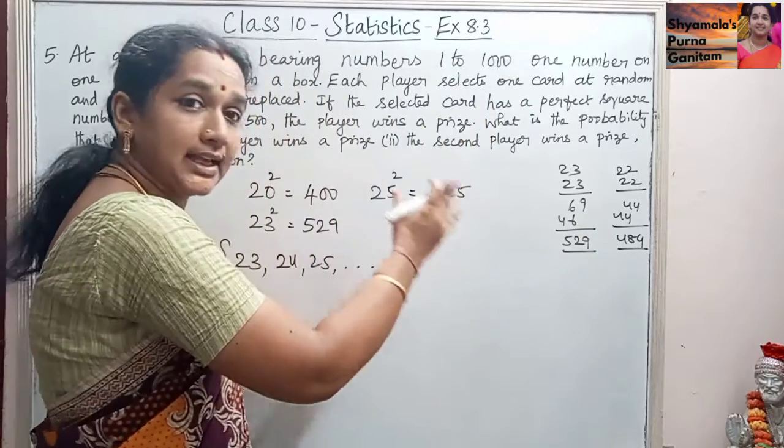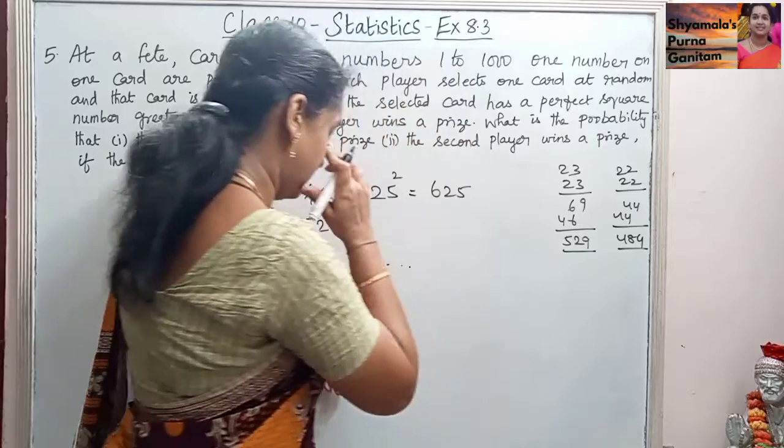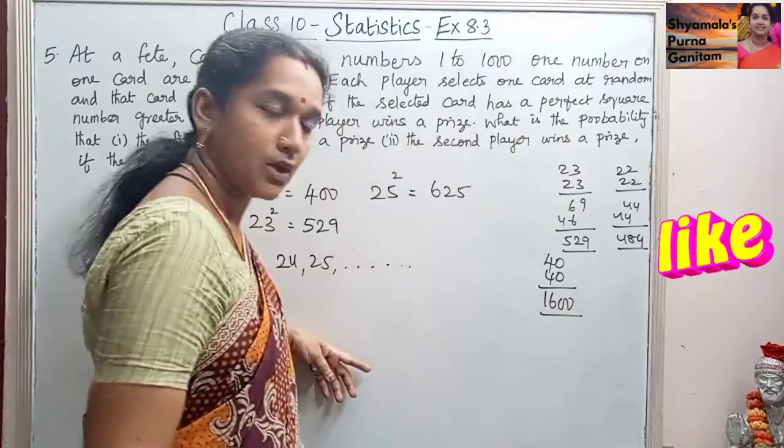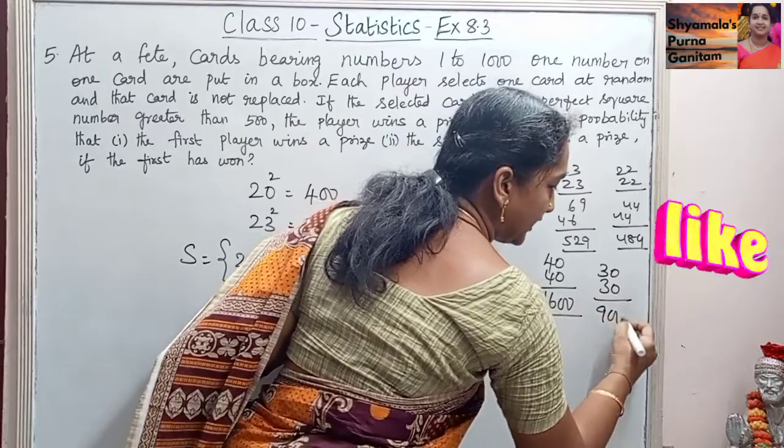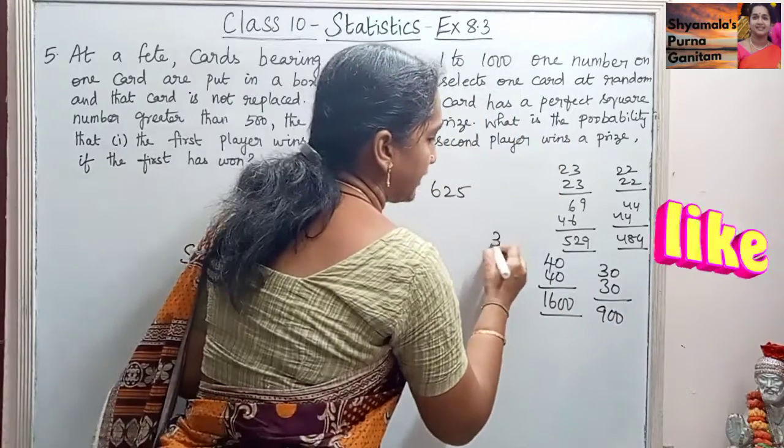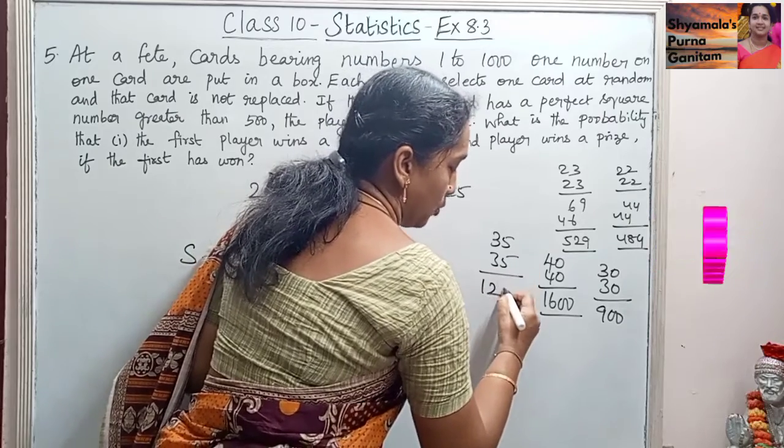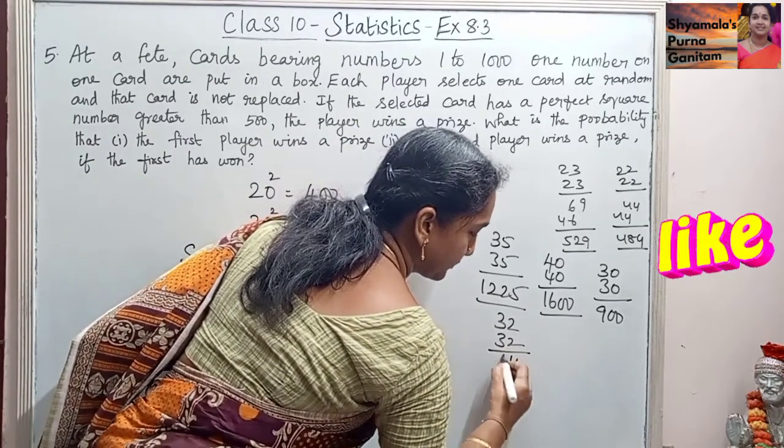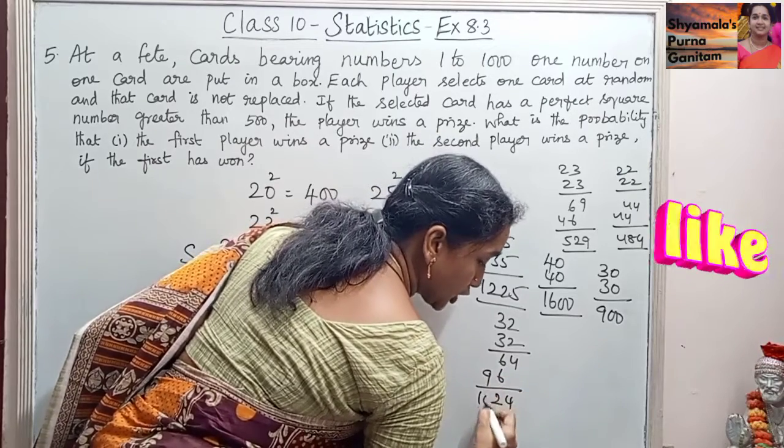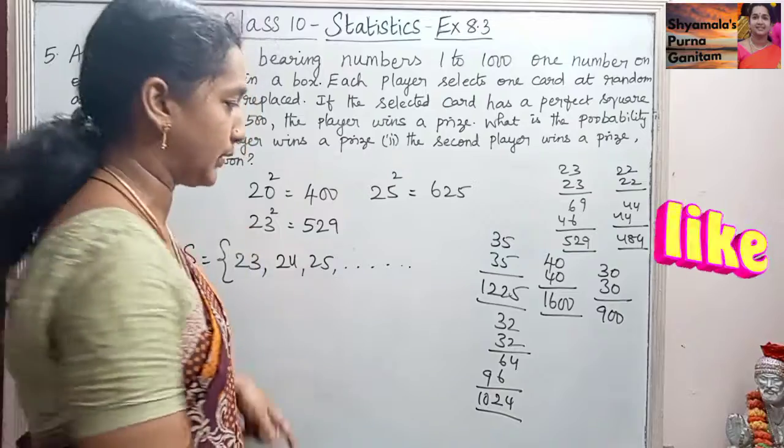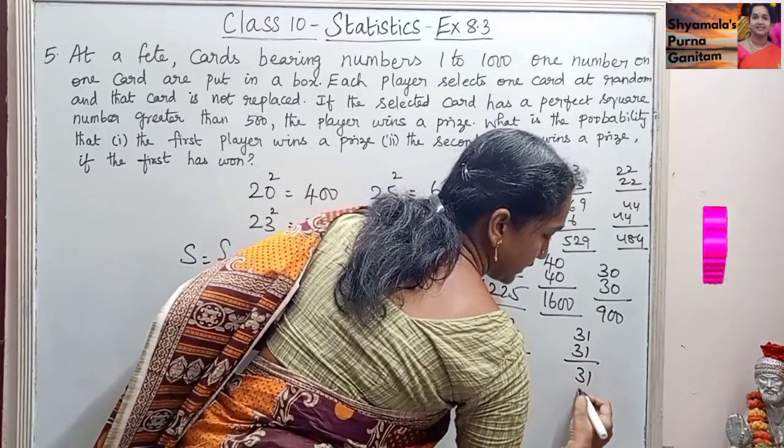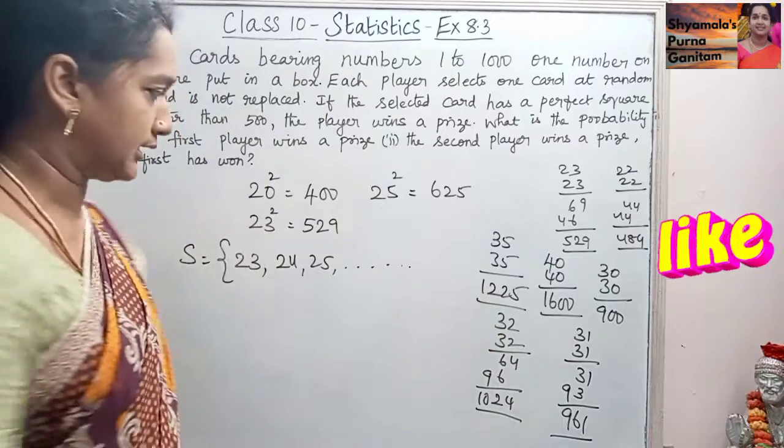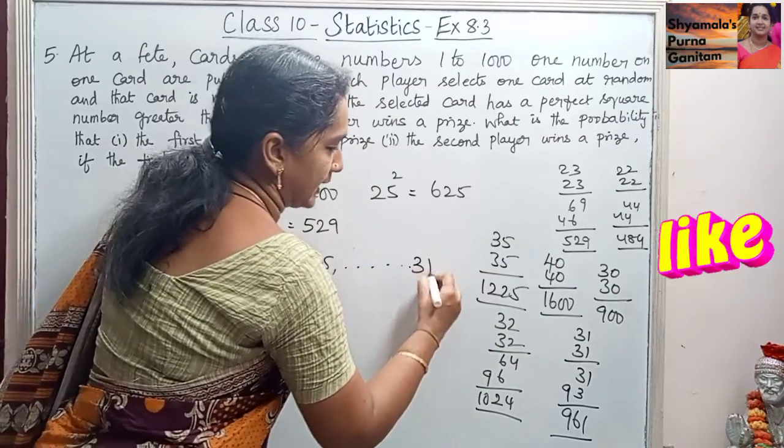If we take, what is the last number that we need to check? If we take 40, if we take card number 40, it will be 1600. Then 30 will be 30 into 30 will be 900. So between 30 and 40, if we check 35, 35 will be 1225, this is also greater than that. So we will check 32, 32 into 32, so this will be 1024. So 31, this one will be 961, which is less than 1000. So the last number, perfect square number, is 31.